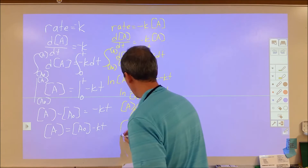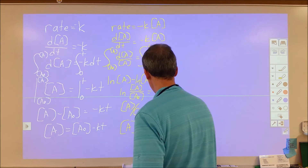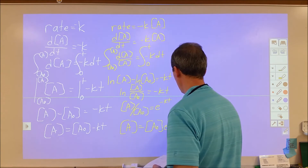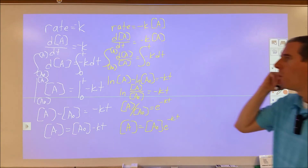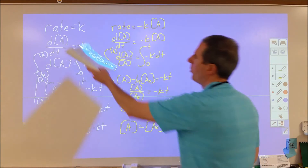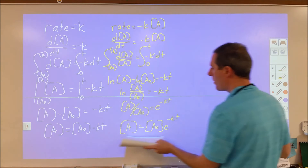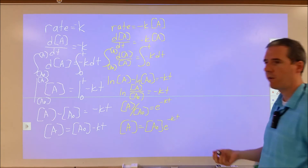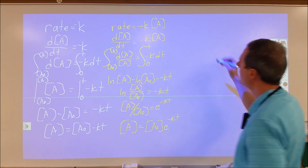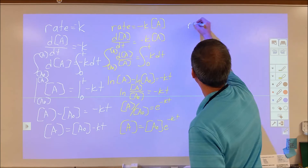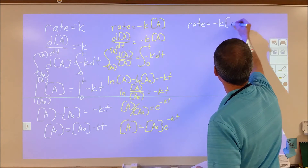That gives us the final equation: A is equal to A₀ times e to the negative Kt, where A₀ is our initial concentration. So whether your rate law is zero-order or first-order will greatly impact how concentration varies with respect to time. Let's do one more for second order — rate is equal to negative K times A squared.